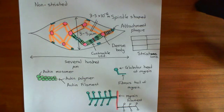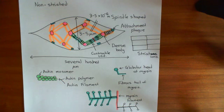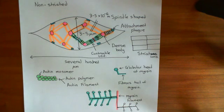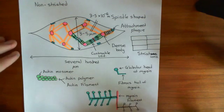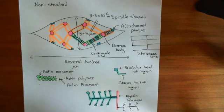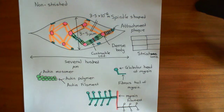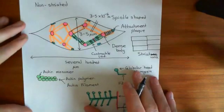Welcome to this next video on smooth muscle contraction. We've now looked at the structure of a smooth muscle cell and how, by contracting these contractile units and getting the myosin filaments to climb up the actin filaments, we can produce contraction of the entire smooth muscle cell. What we now want to look at is how we can activate contraction in the smooth muscle cell. One of the key neurotransmitters which can be used to stimulate smooth muscle cells to contract is acetylcholine.